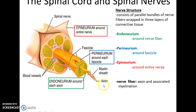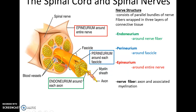Spinal nerves are structures composed of bundles of nerve fibers. Starting with the individual nerve fiber — an axon — around that axon is a tissue called the endoneurium. You then bundle up a group of axons, or nerve fibers, into a structure called a fascicle. This fascicle is surrounded by a sheet of connective tissue called the perineurium. You can then bundle up the various fascicles together with blood vessels to form the nerve, which is wrapped by another sheet of connective tissue called the epineurium.